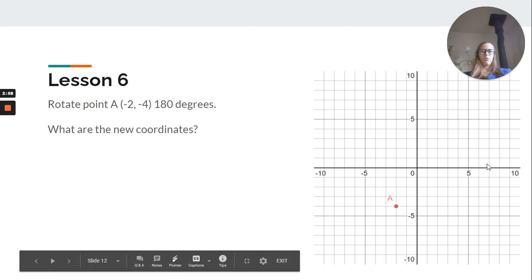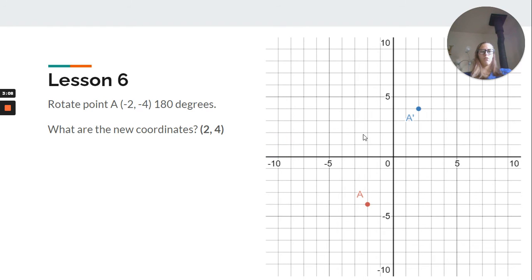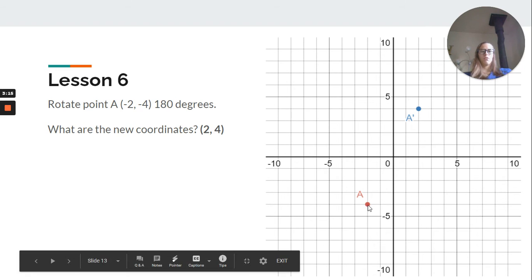Lesson 6, we looked at points on a map. So, rotate point A, which is at negative 2, negative 4, 180 degrees. So, it's moving to here. Then, what are the new coordinates? 2 and 4, because remember, it's just the same. And then, you could break it up into two 90 degree rotations. So, we could rotate it here, and then here.